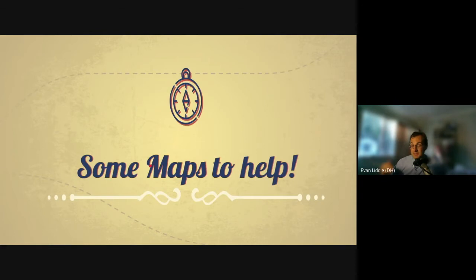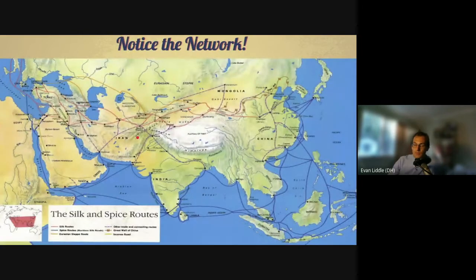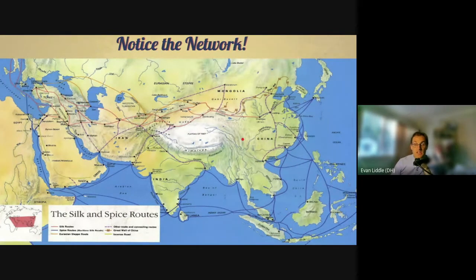Before we dive in, let's get a visual of the Silk Road. The first thing to know is that more than anything else, it's a network of roads — not a single road running from Chang'an all the way to Constantinople. It's a network, with a northern route, a central route, and a southern route. There are many different roads in the Silk Road.